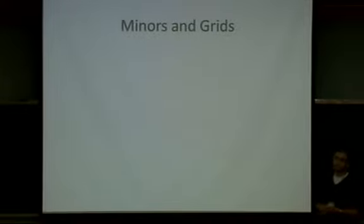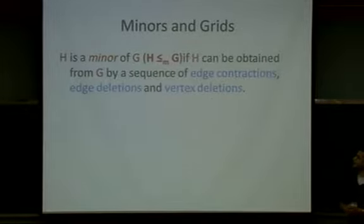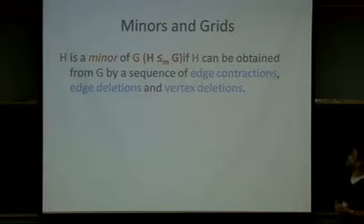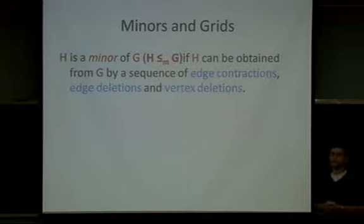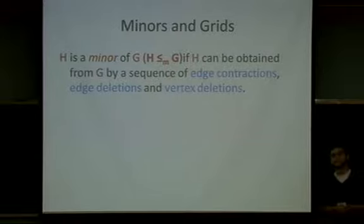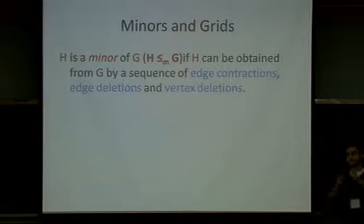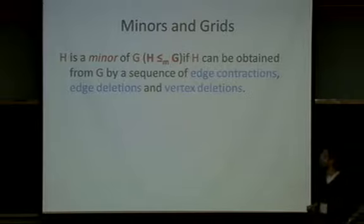Even though this audience probably doesn't need this: H is a minor of G if H can be obtained from G by deleting vertices, deleting edges, and contracting edges, where when you contract an edge, if any double edges arise, you make that a single edge, and if you make any loops, you delete the loops.